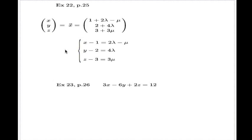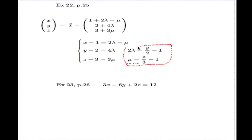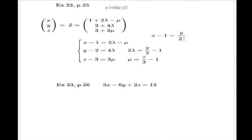We solve for lambda and mu in any way possible and substitute into one of the equations to eliminate them. This is almost trivial — from the second equation, 2 lambda equals y minus 2 divided by 2, giving (y minus 2)/2. From the third, mu equals (z minus 3)/3. Substituting these into the first equation gives: x minus 1 equals (y minus 2)/2 minus (z minus 3)/3 plus 1.